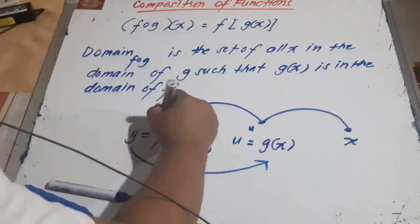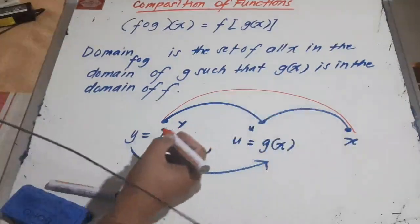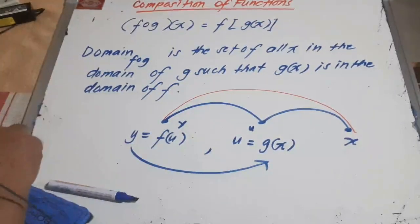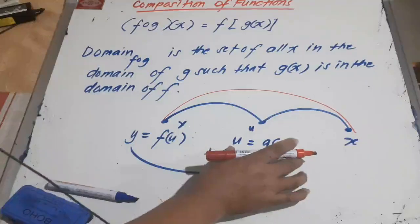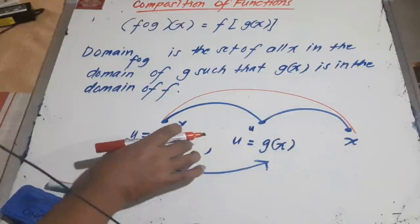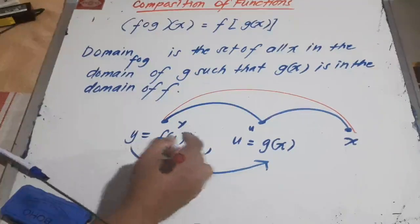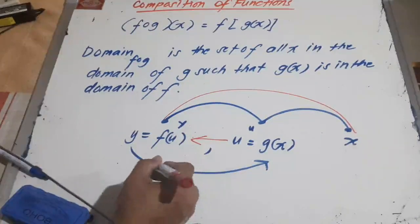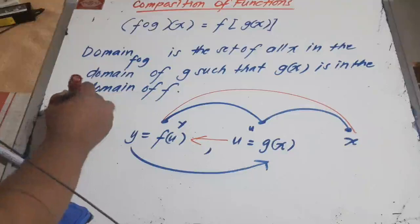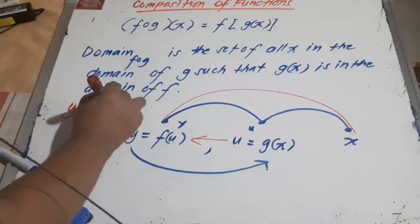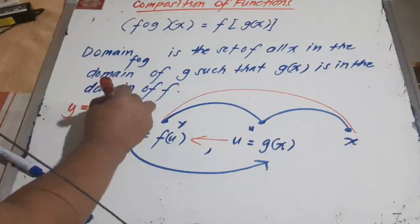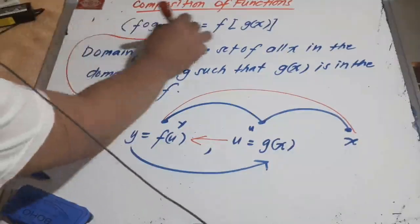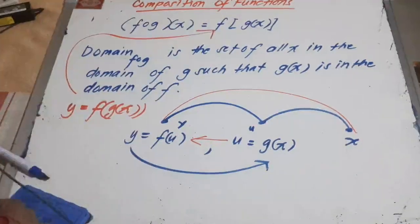To establish the relationship between y and x, all we have to do is substitute the value of u into this function. From here, we're going to replace u by g of x. So that will become y equals f of g of x. That is where f of g of x comes from.